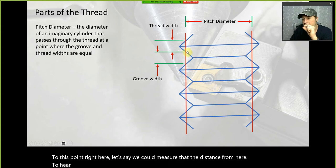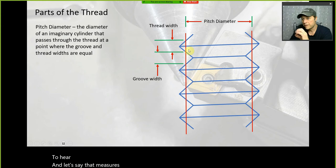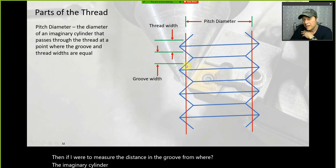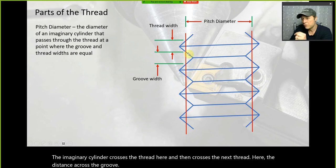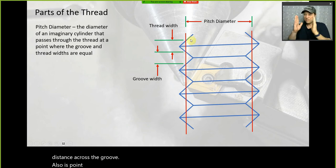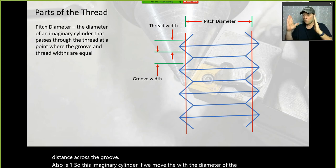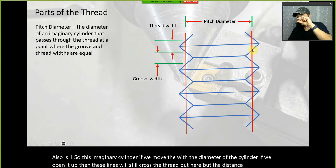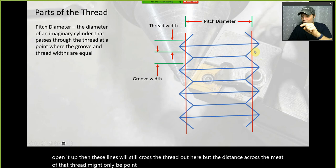If we measure the distance in the groove from where the imaginary cylinder crosses the thread on one side to the next thread, that distance across the groove is also 0.1. If we open the diameter of the cylinder, the distance across the meat of the thread might be 0.05 but the distance across the open groove might be 0.15.